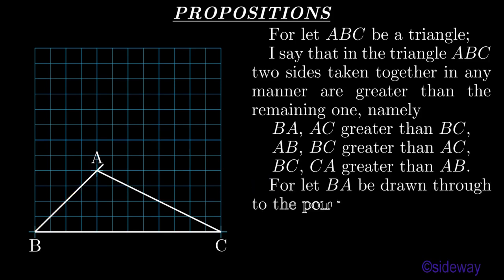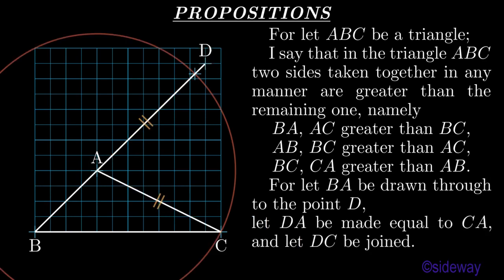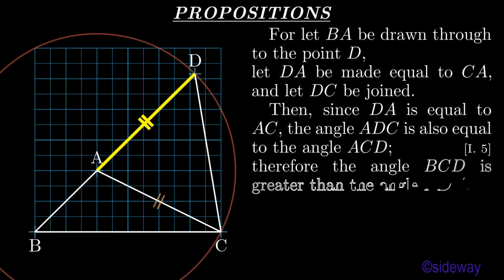Let BA be drawn through to the point D. Let DA be made equal to CA, and let DC be joined. Then, since DA is equal to AC, the angle ADC is also equal to the angle ACD, by Book 1 Proposition 5. Therefore the angle BCD is greater than the angle ADC, by Book 1 Common Notion 5.